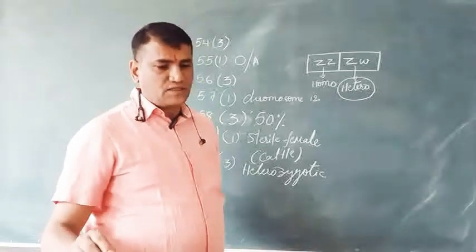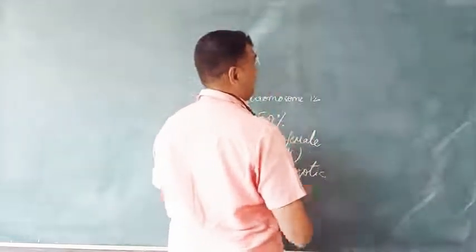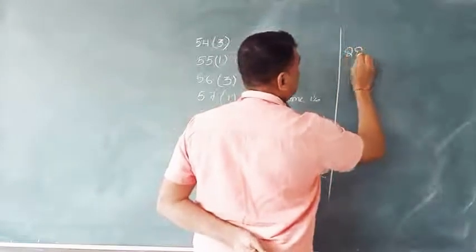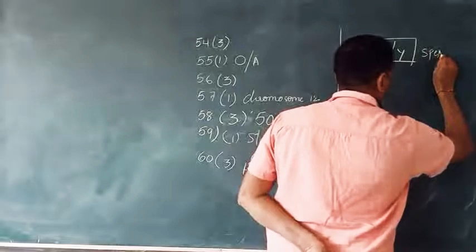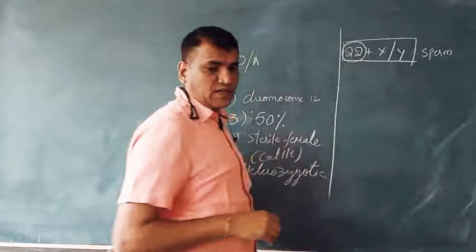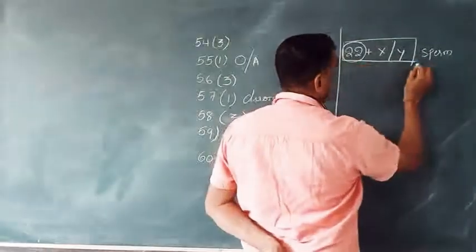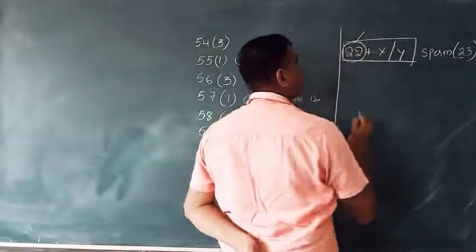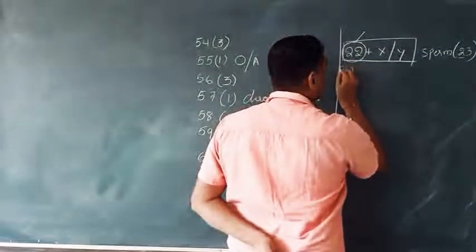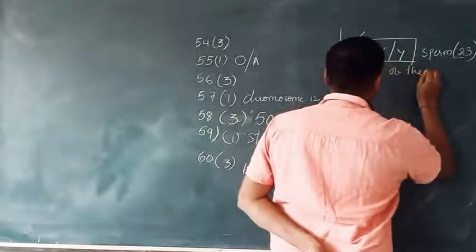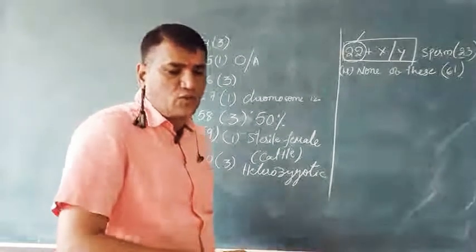Question 61: Number of autosomes in a sperm. In humans the chromosomal number in sperm is 22 plus X or Y. The options given include 44, 23, and 22. Since the sperm is haploid, it contains 22 autosomes plus one sex chromosome. The correct number of autosomes in a sperm is 22. Answer: option 4 — none of these, because 22 is not listed as an option directly.